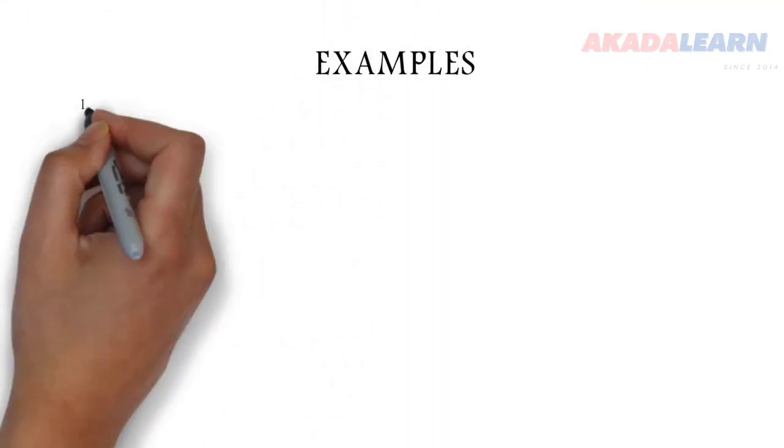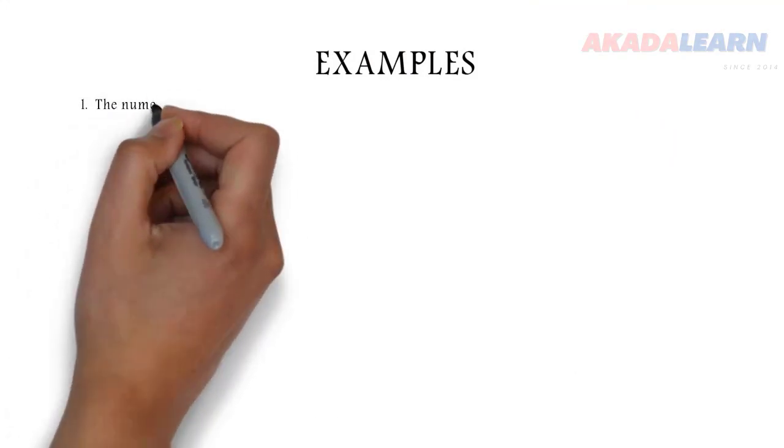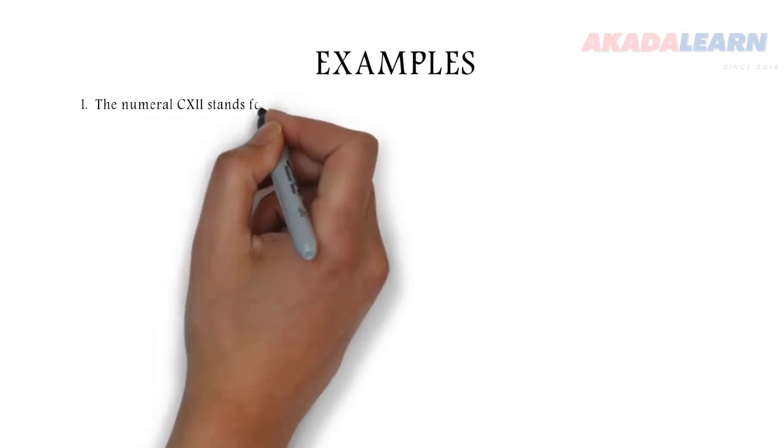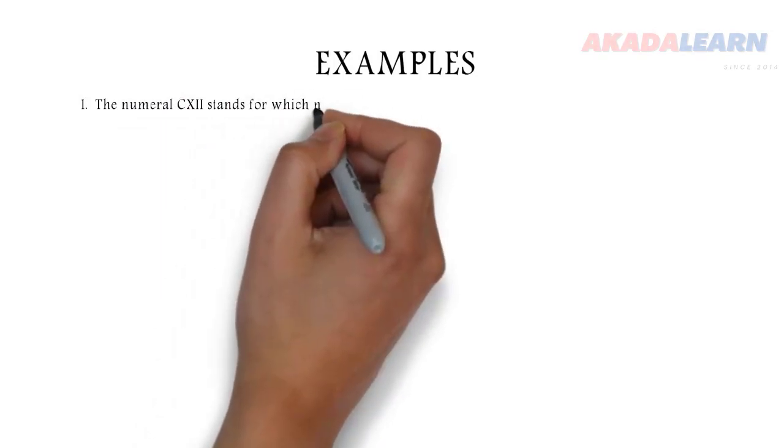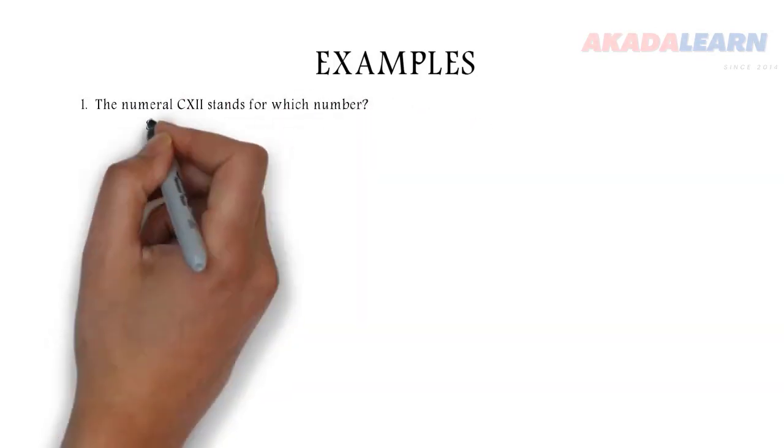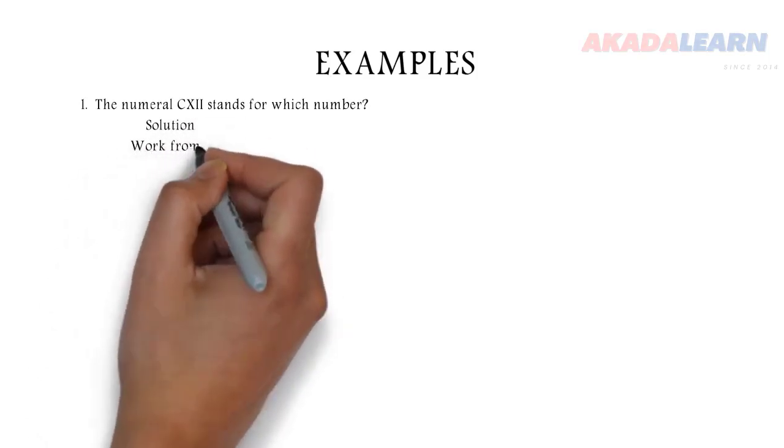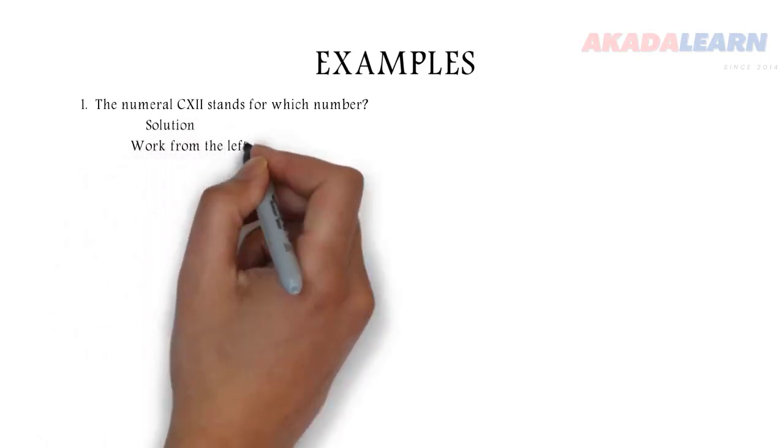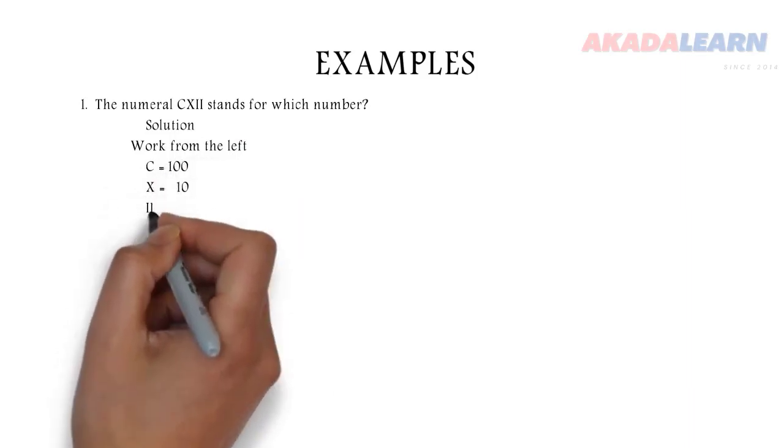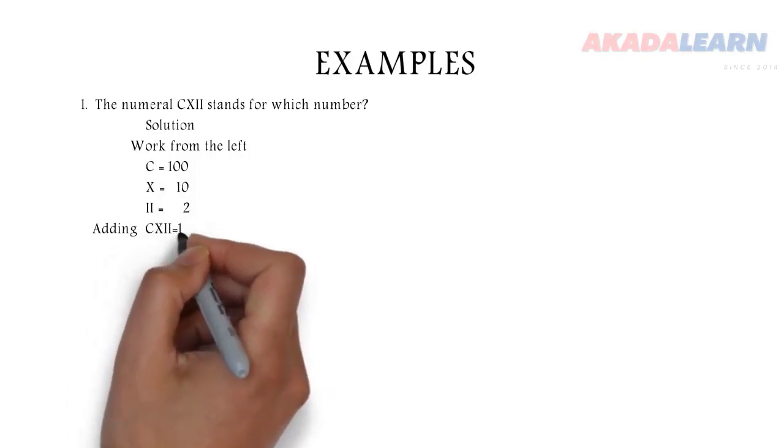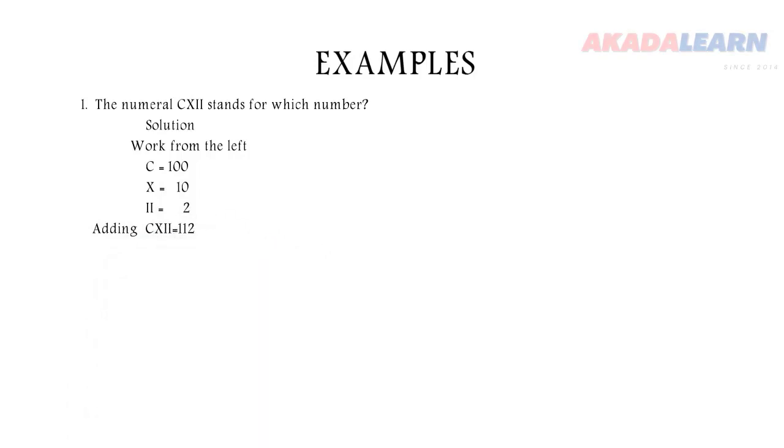So let's see some examples. The first question there says, the numeral CXII stands for which number? So let's see the solution. We work from the left-hand side. So meaning we write C first, which is 100, X which is 10, II which is 2. Then we will now add up 2 plus 0 plus 0 is 2, 1 plus 0 is 1. Then the other one, we bring it down.